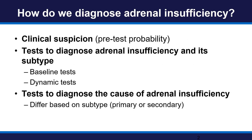How do we diagnose adrenal insufficiency? First, we have to have those clinical symptoms and signs that raise clinical suspicion of adrenal insufficiency. Secondly, we use either baseline or dynamic tests to diagnose adrenal insufficiency as well as the subtype. Finally, we use tests to diagnose the cause of adrenal insufficiency, and these tests differ based on subtype.